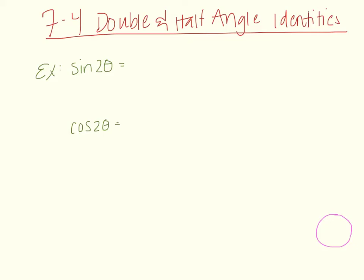Section 7.4 is on double and half angle identities. It deals with an angle in our trig function that we want to write as two times an angle or one half an angle. But before we look at that, I want to show you where these come from.